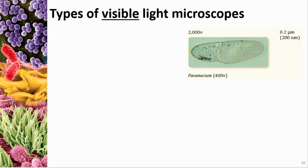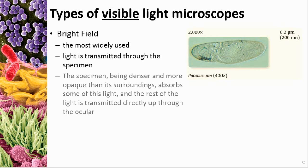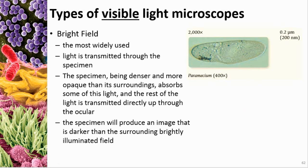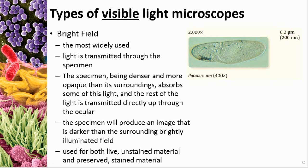The most common visible light microscope is bright field. Light has to be transmitted through the specimen — the more dense the object, the less light penetrates it, producing different shades. The specimen produces an image darker than the surrounding field. We use this for both live unstained material and preserved material — bacteria on a permanent slide with a cover slip glued to the surface — as well as stained materials.